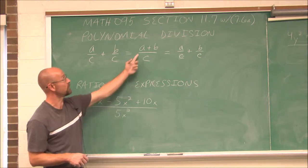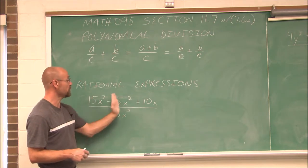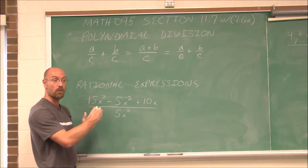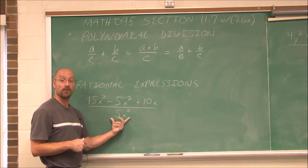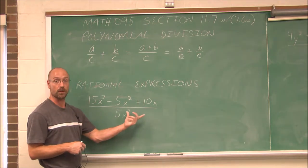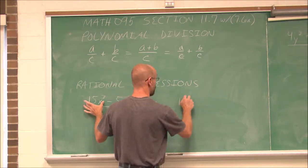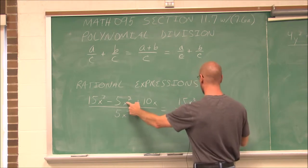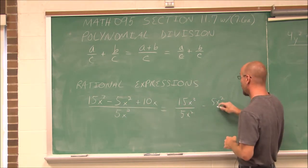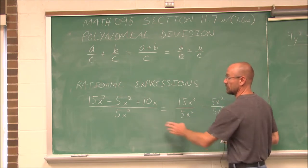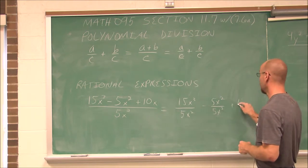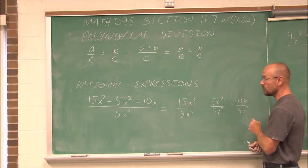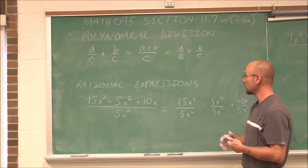What we see here is similar to splitting up fractions — we want to break it up so that each of these terms is divided by 5x squared. Think about distribution: when we multiplied, we distributed to each term. Well, this is a form of distribution except we're dividing each term. So I can split this up: the first term has to be divided by the denominator, the next term — negative 5x squared — divided by that denominator, and the last term, positive 10x, divided by x squared. To divide by a monomial, we just break it up by each term and simplify using our rules of exponents.